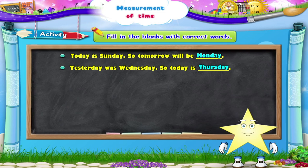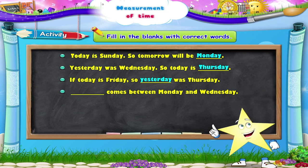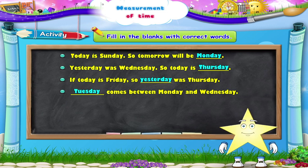Let's read the next question. If today is Friday, so blank was Thursday. The right answer is yesterday — if today is Friday, so yesterday was Thursday. Blank comes between Monday and Wednesday. Can you answer? Yes, Tuesday.